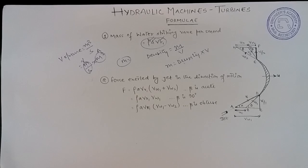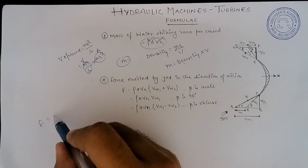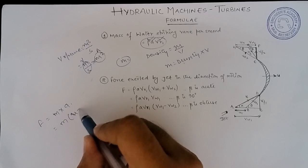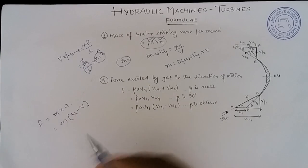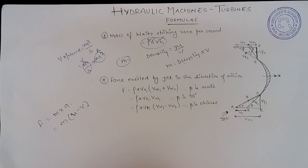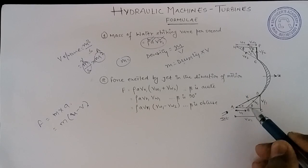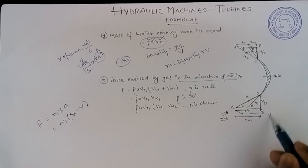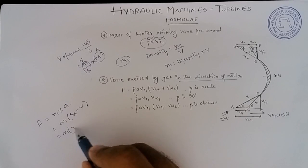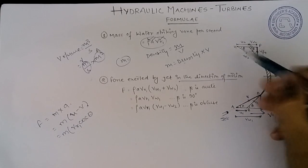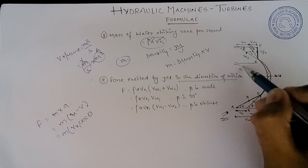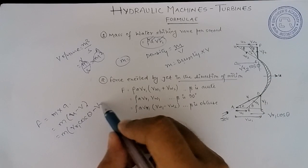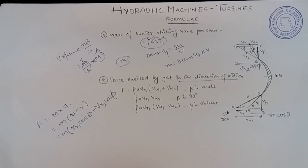The next formula is force exerted by jet in the direction of motion. We know force equals mass into acceleration, and acceleration is change in velocity — initial velocity minus final velocity. Initial velocity comes from the inlet triangle and final velocity from the outlet triangle. The initial velocity in the direction of motion is vr1 cosθ, and the final velocity in the direction of motion is vr2 cosφ, which is in the opposite direction.